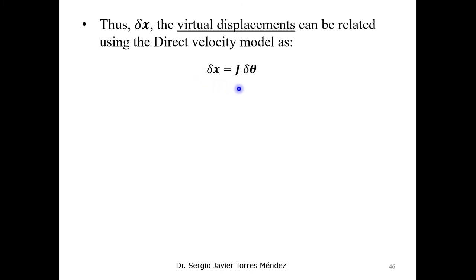As we remember, we need to include the Jacobian matrix, because the Jacobian matrix is going to map all these distance chains that we have between the end effector motion and the joints motion.